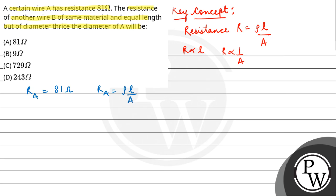Now for wire B, the resistance R B will be equal to rho, because the material is the same. Resistivity will be the same. Length is equal, given.